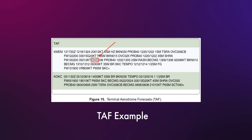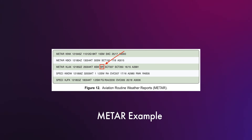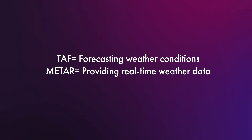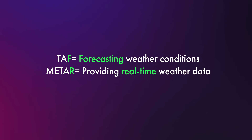Since TAF and METAR are easy to confuse, here's a good way to remember the difference. TAF stands for Terminal Aerodrome Forecast — the key word is F for forecast. So TAF gives you a look into the future: what is the weather going to be like over the next 24 to 30 hours? METAR, on the other hand, is all about the R — real-time conditions. It's what the weather is like right now.